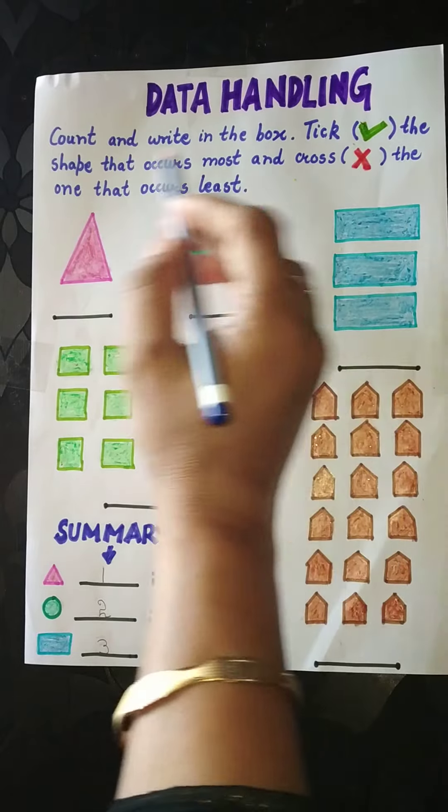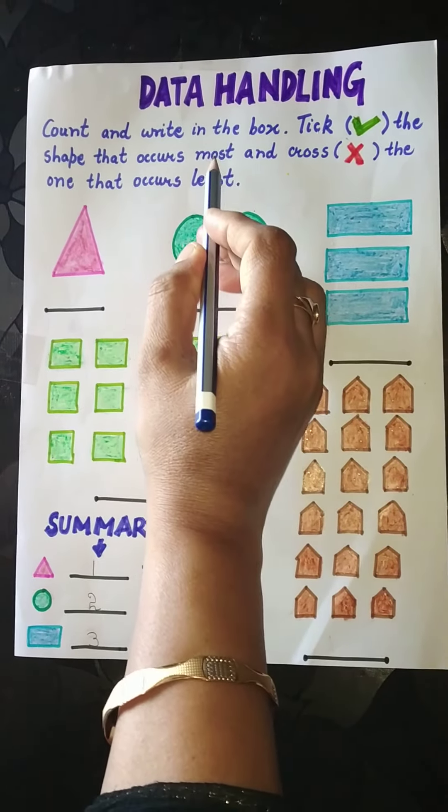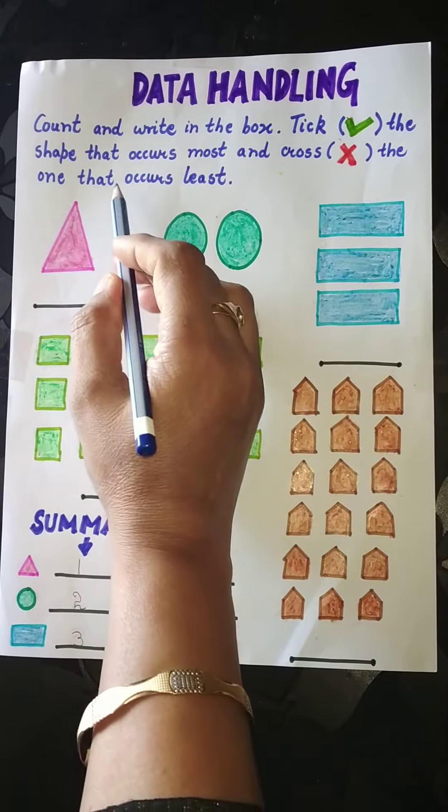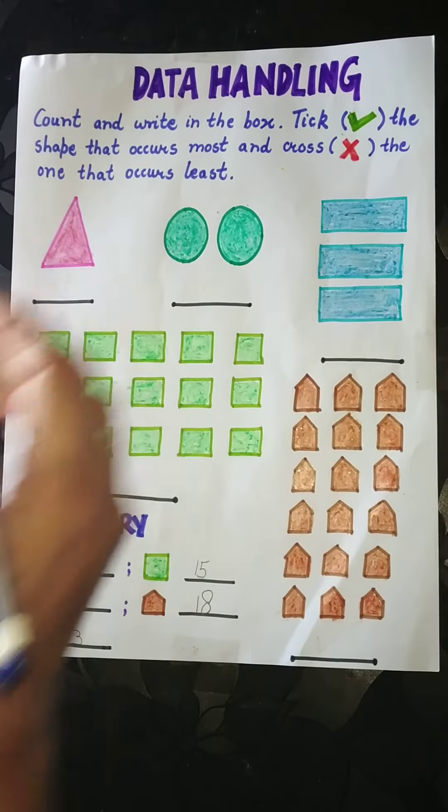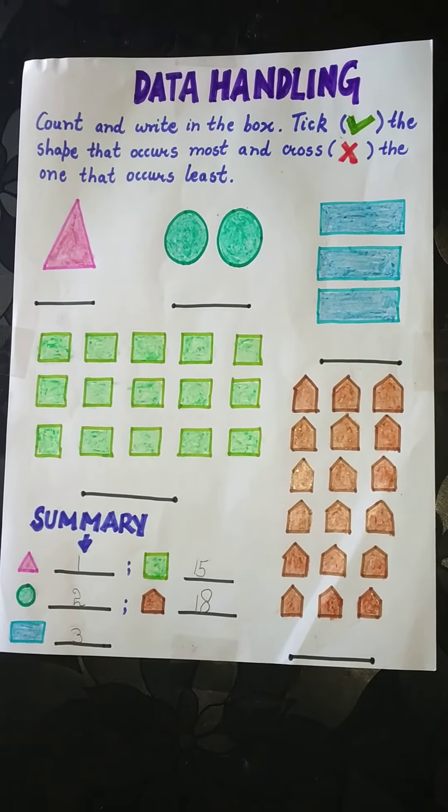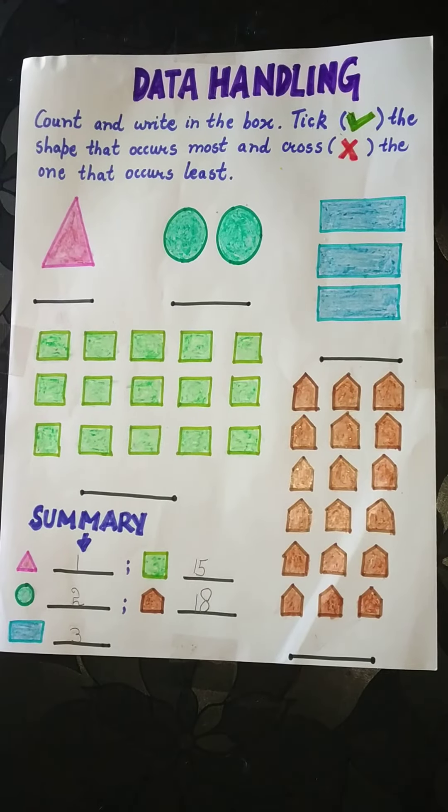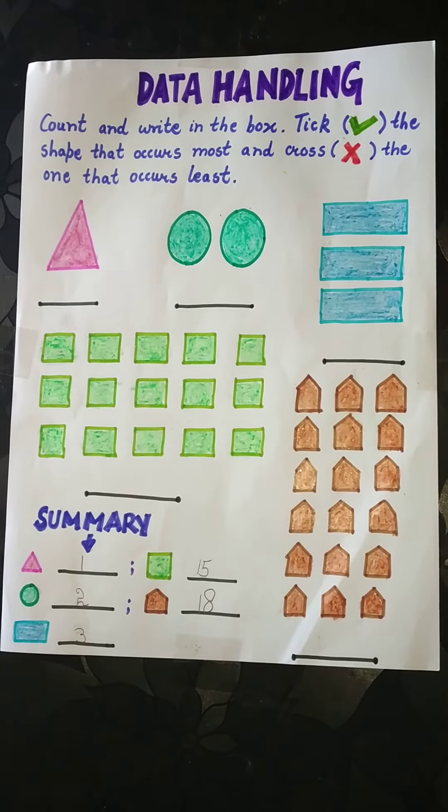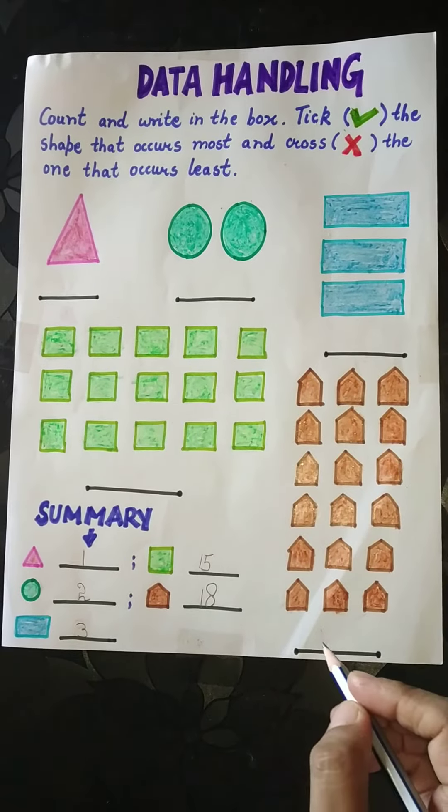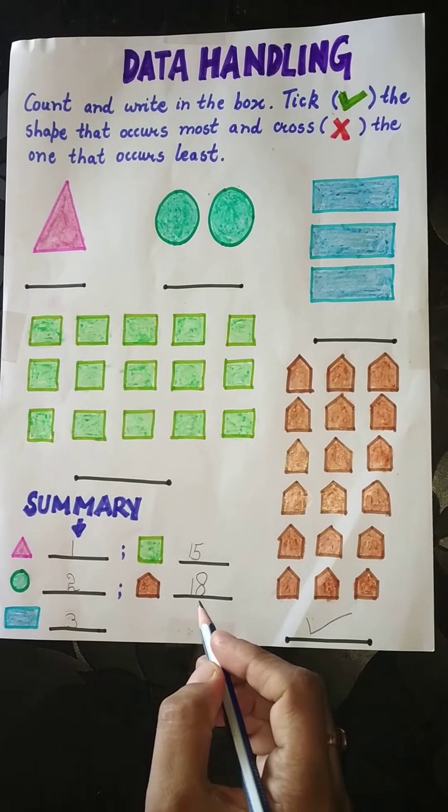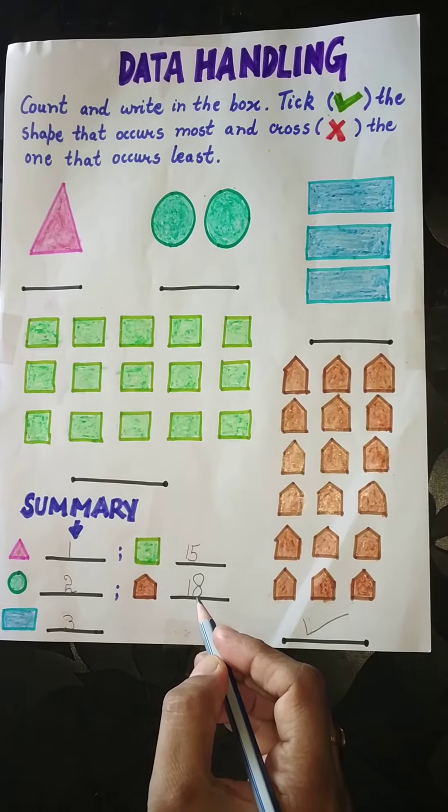Now see the question. Tick the shape that occurs most and cross the one that occurs least. Children, we have to tick the shape that occurs most. Which shapes are present in more number? Yes, pentagon because the number is eighteen.